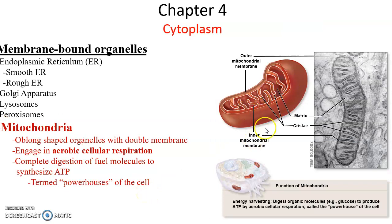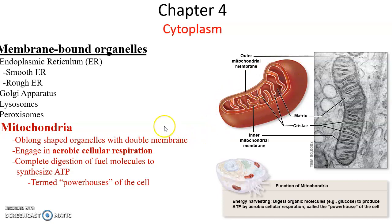Mitochondria are shaped sort of like a bean. They have two membranes: an inner mitochondrial membrane and an outer mitochondrial membrane — so it's a double membrane. This is of course where aerobic cellular respiration occurs. Massive amounts of ATP are produced here. Mitochondria are the powerhouse of the cell.